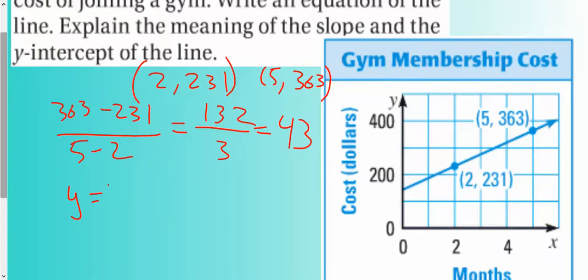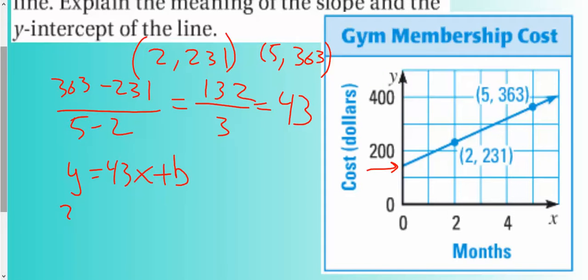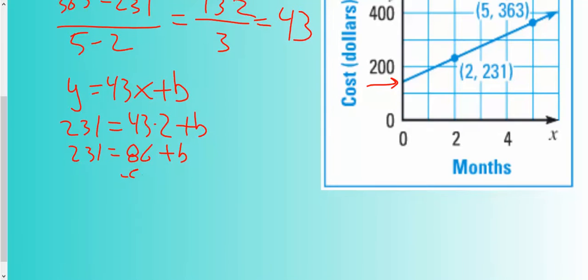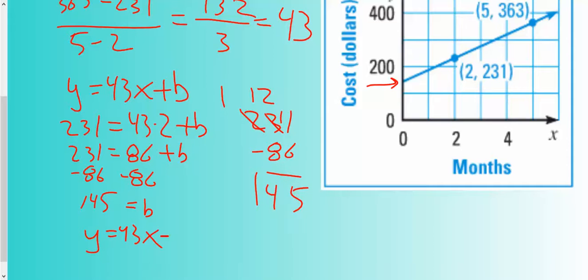So y equals 43x plus b. Now I need to figure out what this b is. I don't know what it is because it's not on a whole number. I need to take one of my points, plug it in for x and y. I'm going to choose the smaller point. You can use either one, but I'm going to use the smaller values. 43 times 2, that's going to be 86 plus b. I'm going to have to subtract the 86. So 231 minus 86 equals 145. So b equals 145.